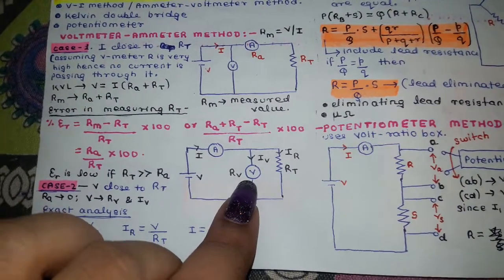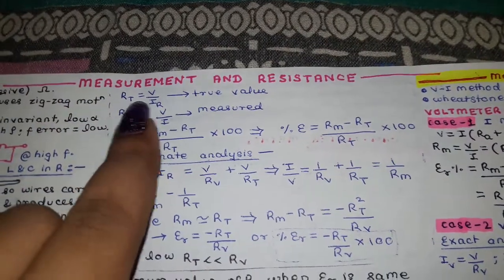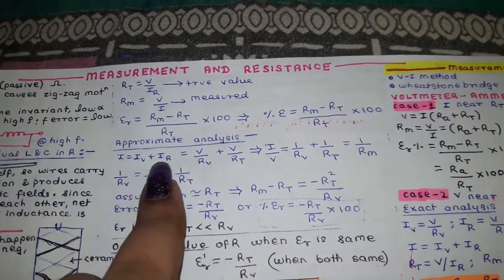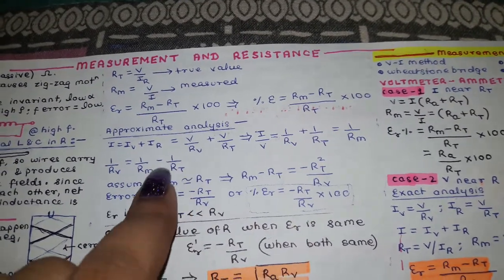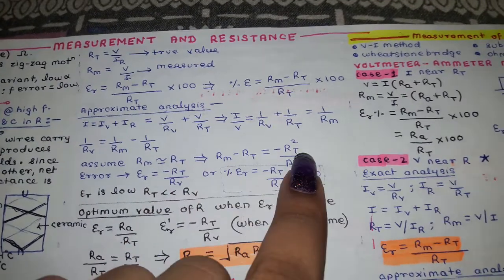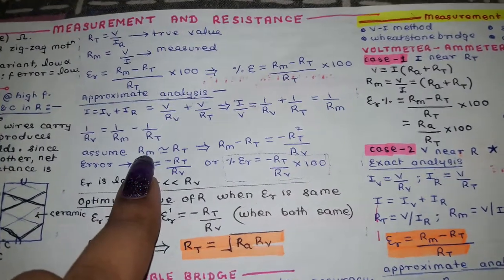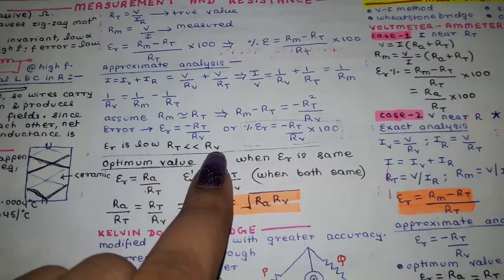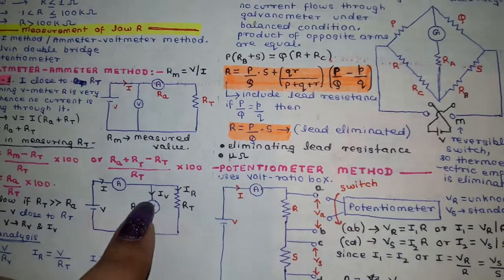In Case 2, the voltmeter is placed close to the unknown resistance. The true value and measured value differ, and the error and percentage error can be calculated accordingly. For approximate analysis: 1/Rb = 1/R_measured − 1/R_unknown. If the measured value and unknown resistance are approximately the same, simplified error and percentage error formulas apply. Error is low when the unknown resistance is much lower than the voltmeter's internal resistance.